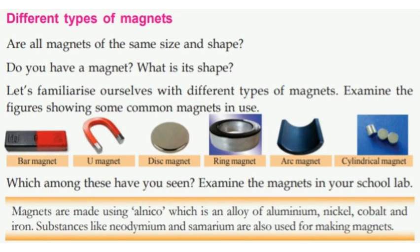Magnets are made using alnico, which is an alloy of aluminum, nickel, cobalt, and iron. Substances like neodymium and samarium are also used for making magnets.